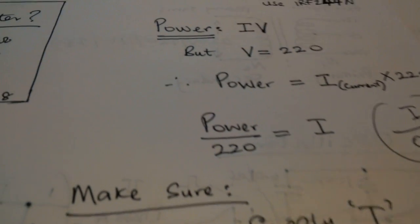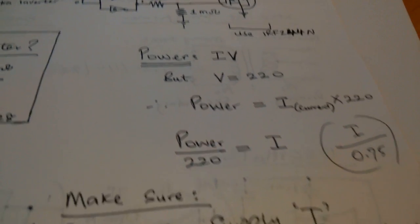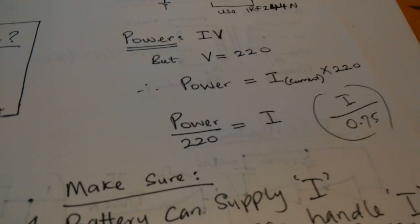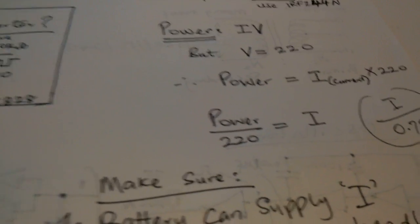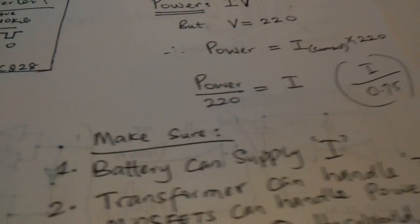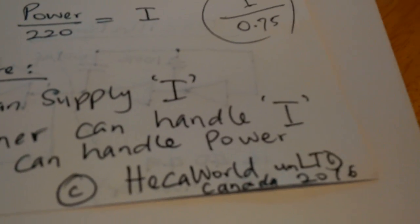So, that is it pretty much right there. You can make your inverter. If you're looking for a two kilowatt inverter, you should be looking at something around 12 to 13 amps, and so forth. This is, again, Heka World Unlimited, coming to you direct from Canada.